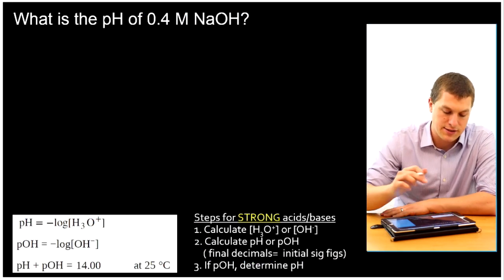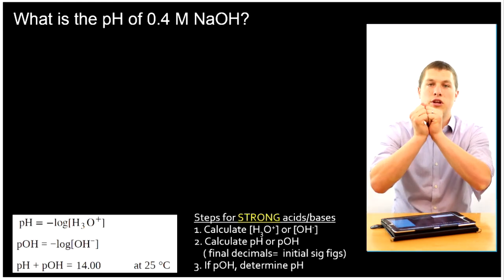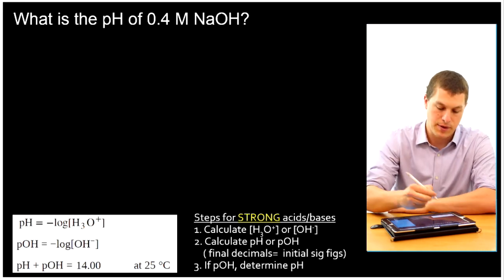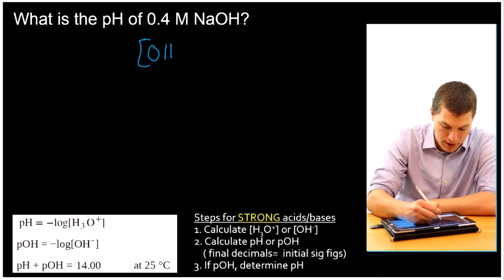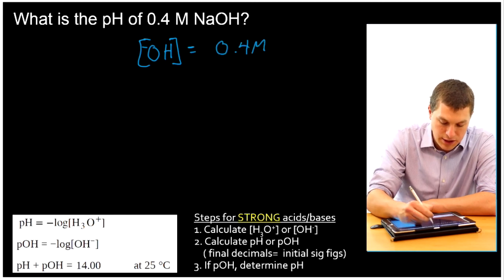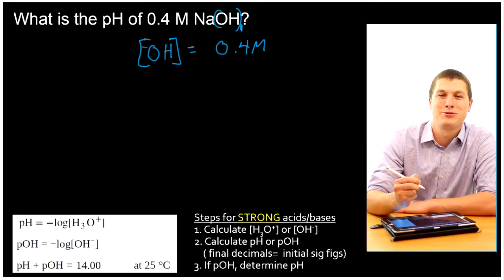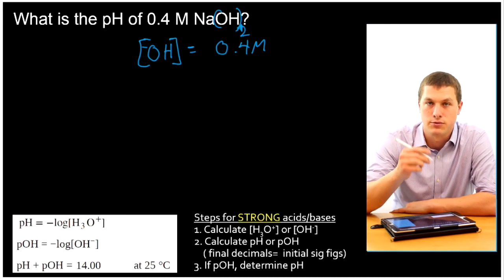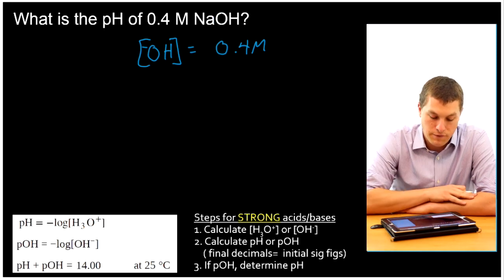So here we got sodium hydroxide. That's a base. And we can recognize that because it's got the OH- on the end. And just like our HCl, when I put sodium hydroxide down into solution, all my sodium ions and all my OH ions are going to split apart. And that means that my concentration of sodium hydroxide is equal to my concentration of hydroxide ions. So I know right away my hydroxide ions are going to be at a concentration of 0.4 molar. Importantly, there's just one hydroxide there. If there were two hydroxides there, that would increase the concentration of hydroxide ions. We'll actually do an example like that in just a second.